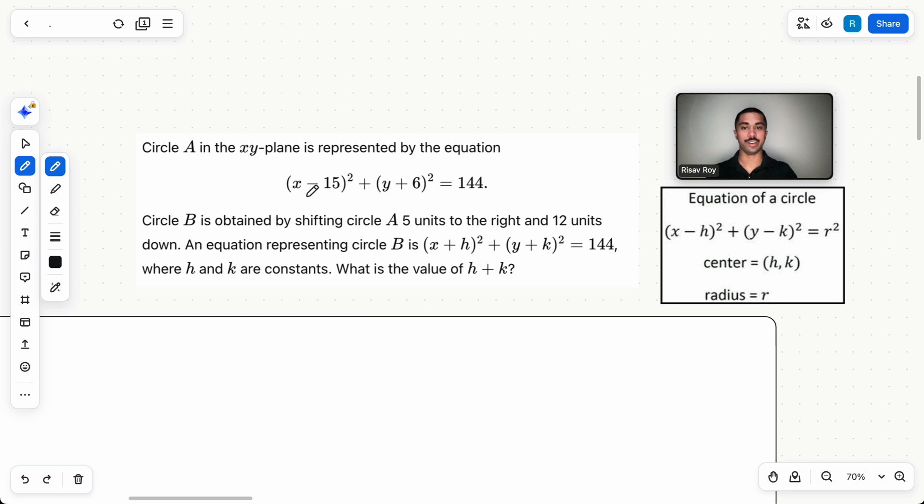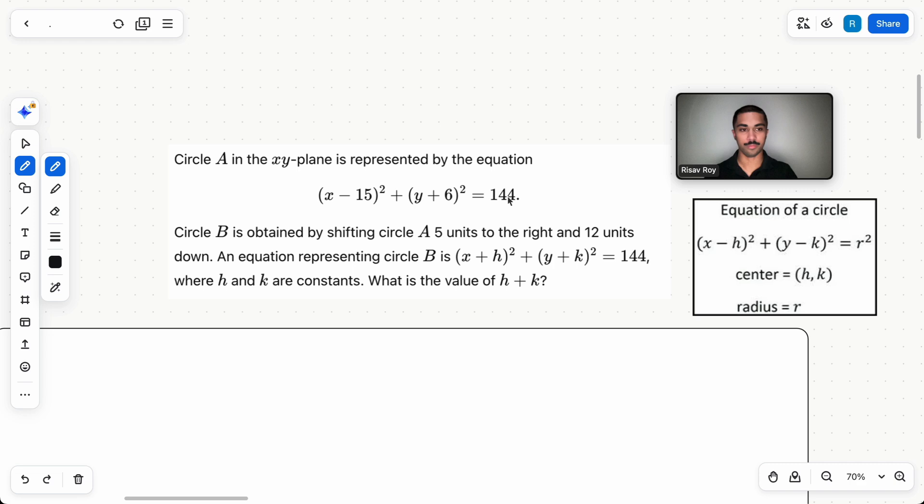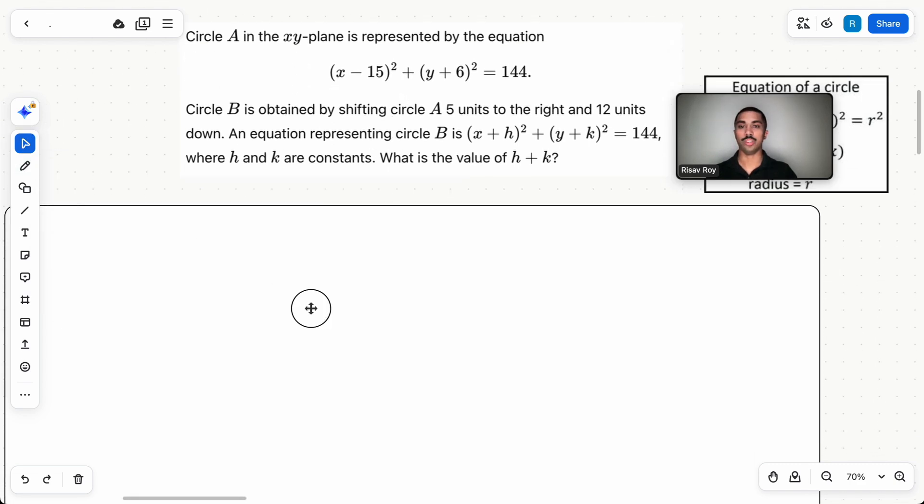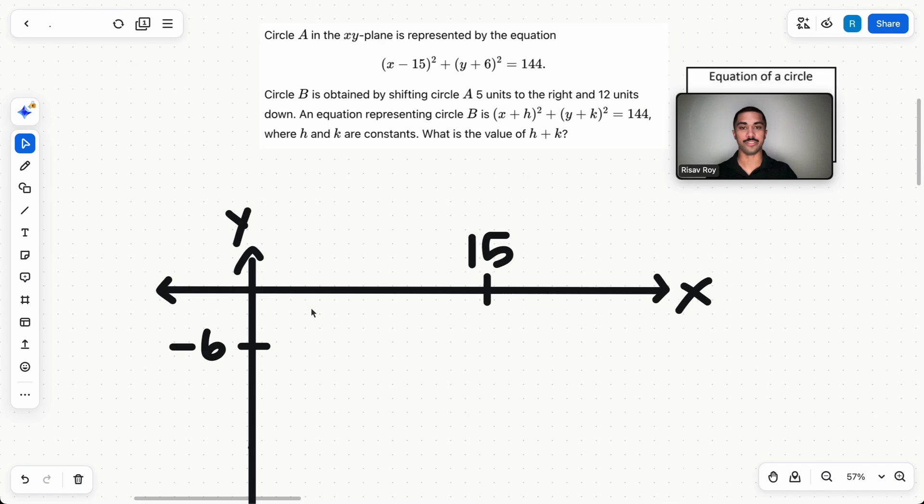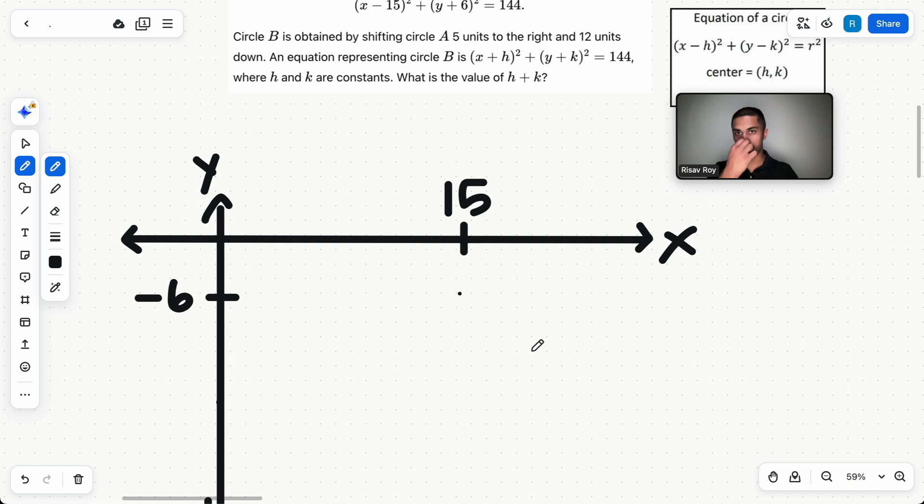So, why do we need to know this? Well, first, we need to know what the center of this circle is. You could either graph this on Desmos, or you could just know this, you just have this memorized. And that way, you'll know that the center is at (15, -6). So it's right here. It's in quadrant 4. What we want to do is find the center of circle B. How do we do that?